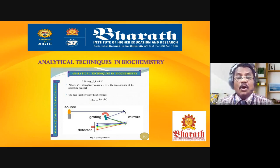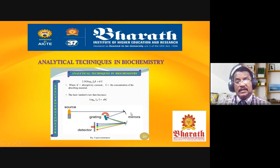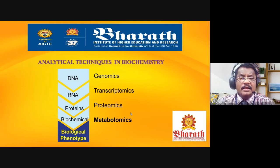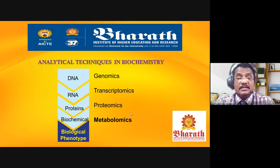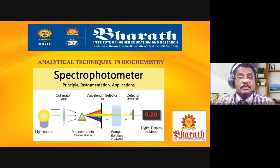Spectrophotometry uses a light source to differentiate the color intensity of unknown samples. DNA analysis is genomic, RNA analysis is transcriptomic, analysis of proteins and amino acids is proteomic, and metabolic analysis is metabolomics. These are the methods currently used. Spectrophotometry basic principles, instruments, and applications will be covered next.